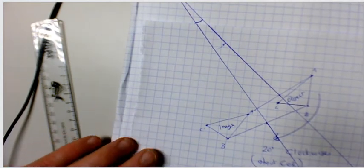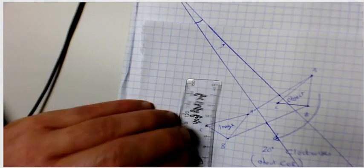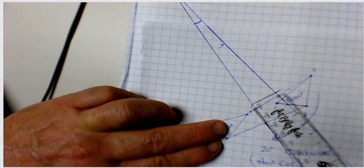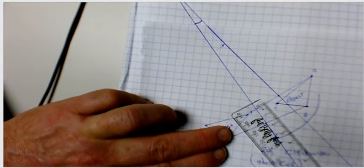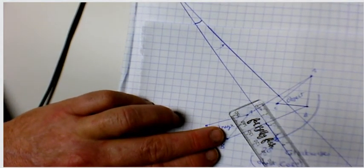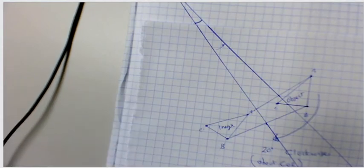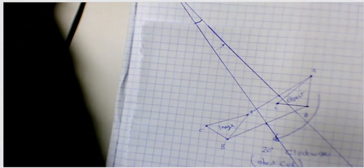Hopefully even without a protractor or set of compasses, you can see that you can still find the center of rotation using just a ruler. Hopefully that's been helpful — if you've got any problems, drop me an email and I will help out.